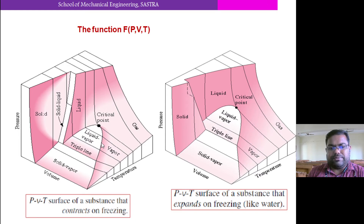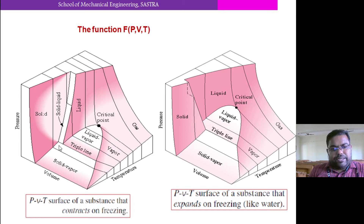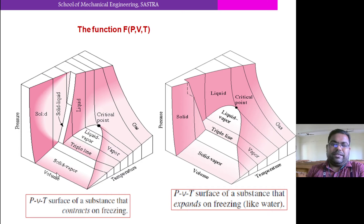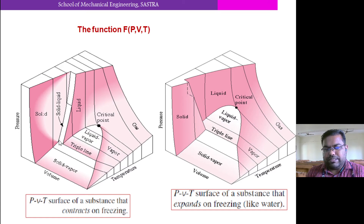Once you cross the vapor dome, this line is the saturated vapor curve, and this side is the saturated liquid line. If we cross that, it will become fully vapor — that is called superheated vapor. This line connects solid, liquid, and vapor. It is the temperature at which all three phases coexist in equilibrium, and such a temperature is known as the triple point temperature or triple point line. Below the triple point, liquid may not be present — only solid and vapor exist. So from solid, it will directly convert to vapor. Any phase change process in which solid directly goes to vapor is known as sublimation.